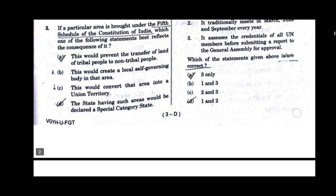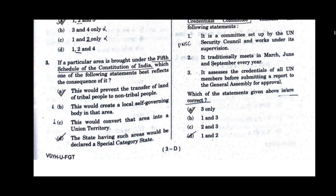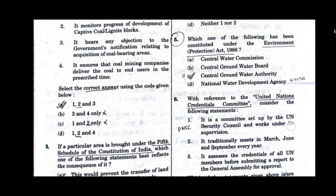Question number 3. If a particular area is brought under the 5th Schedule of the Constitution of India, which one of the following statements best reflects the consequence of it? The correct answer will be option A: this would prevent the transfer of land of tribal people to non-tribal people.